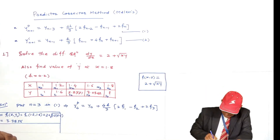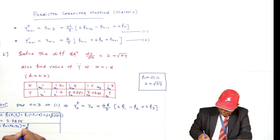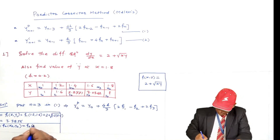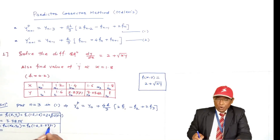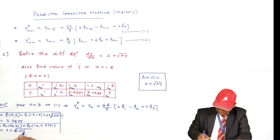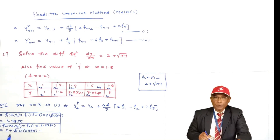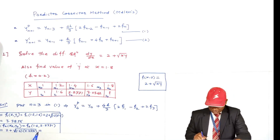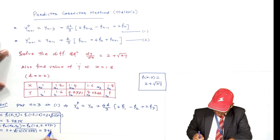F2 = f(X2, Y2). X2 = 1.4 and Y2 = 2.271. F2 = 2 + √(1.4 × 2.271). Computing this gives F2 = 3.9696.